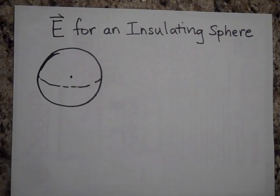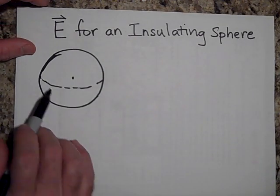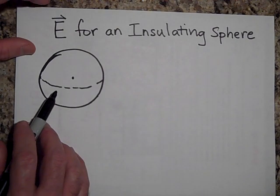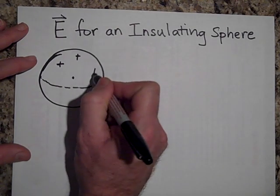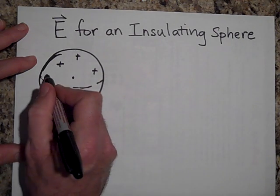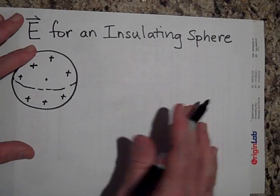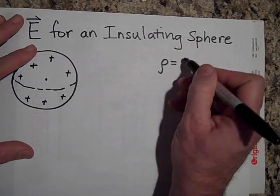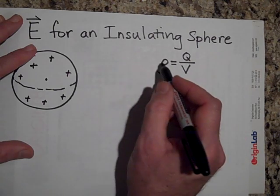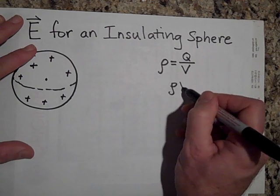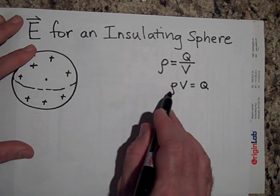I'd like to tell you about how to find the electric field for an insulating sphere that's charged up. This sphere is not a metal but an insulator — maybe made out of wood, styrofoam, or plastic — and the charge is embedded evenly throughout. The charge density is given the term rho, which is charge per volume, so the charge Q equals rho times the volume.